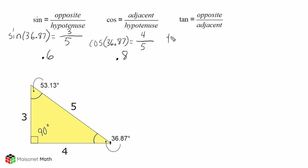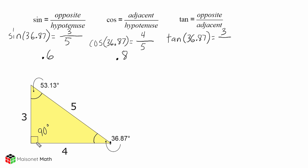Let us go ahead and take a look at the tangent of 36.87 degrees, which is going to be equal to the line that is opposite of our angle over the line that is adjacent to our angle. The side opposite this angle is 3, which was our numerator when we constructed our sine ratio, and the line adjacent to this angle is 4. If we express this as a decimal, that would be equal to 0.75.